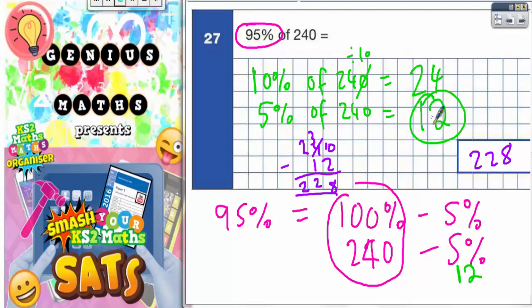Just to recap: we found 5% of 240 is 12, and if you take 5% off of 240 to leave yourself with 228, that will be your 95%. So 95% is 228.